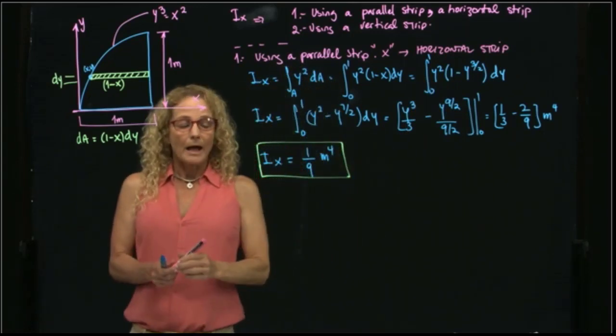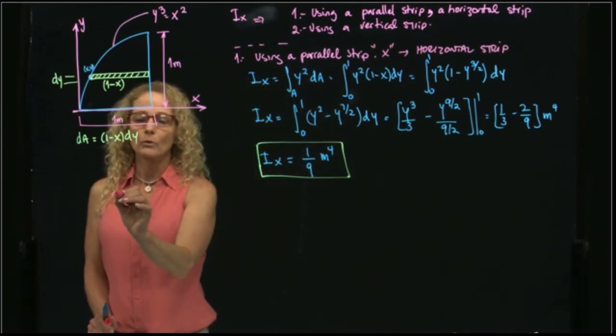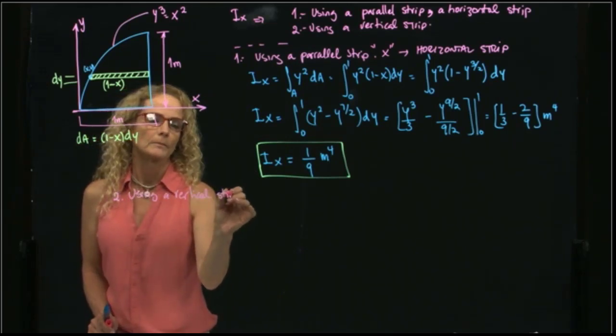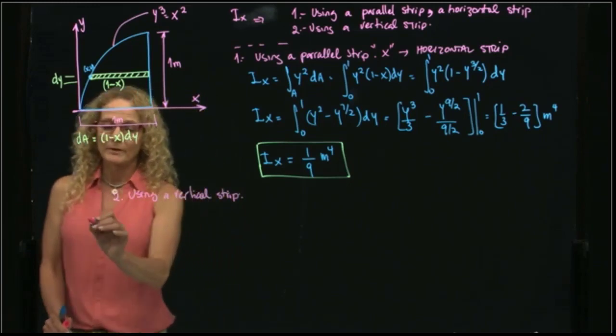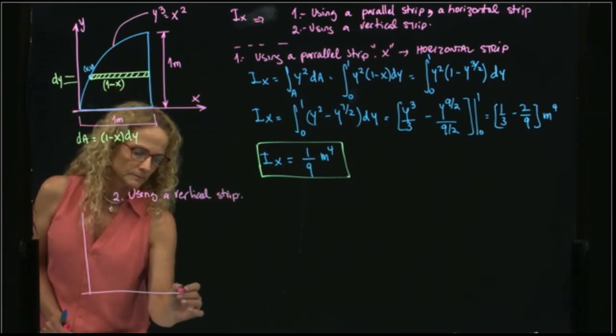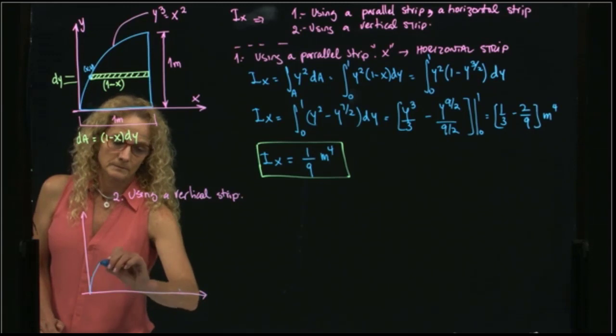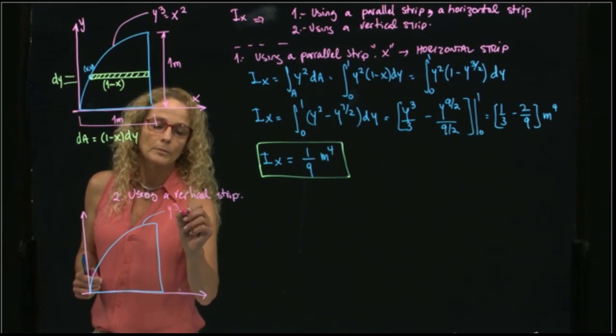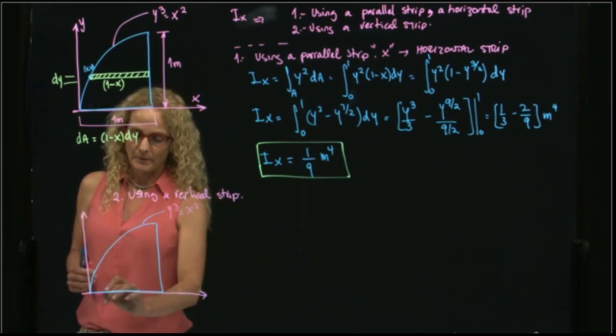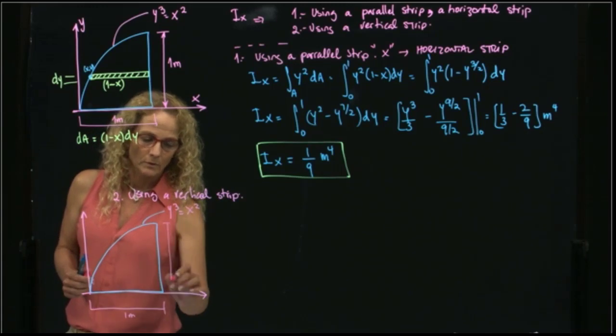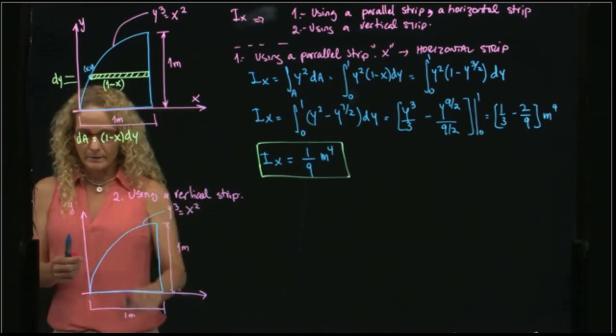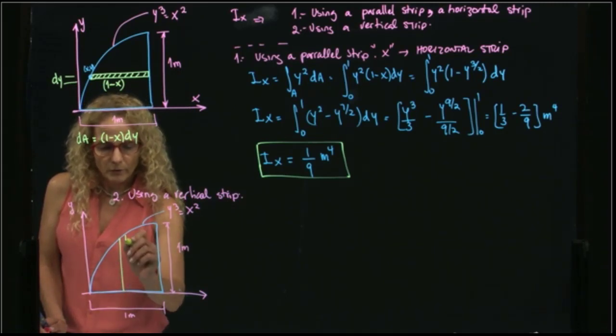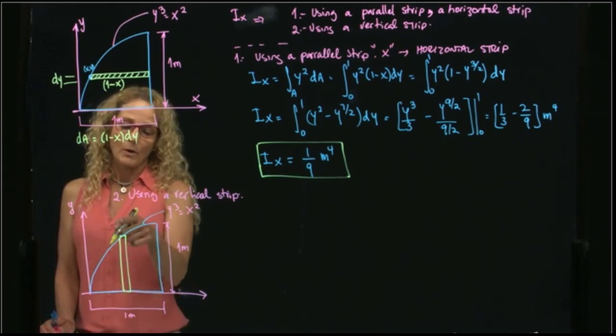I will then now solve the same problem by using a vertical strip. So let me draw my figure again, so not to get confused. This is still y cubed equals x squared. My dimensions are the same, of course.